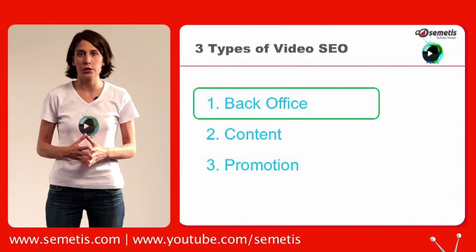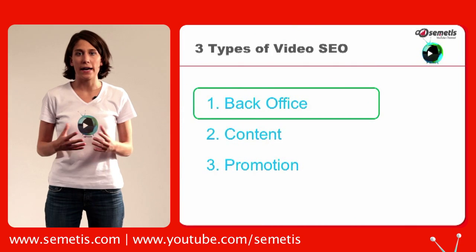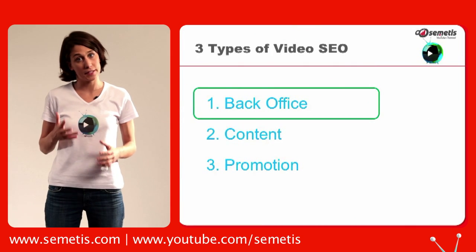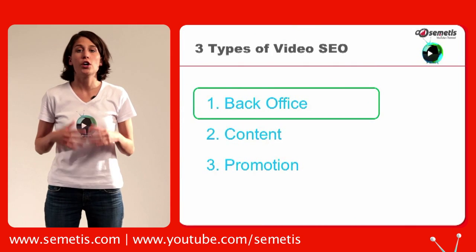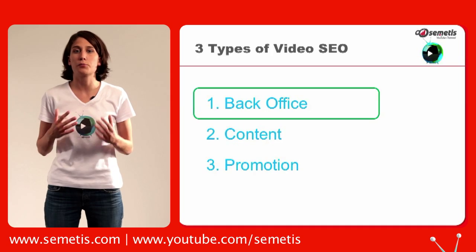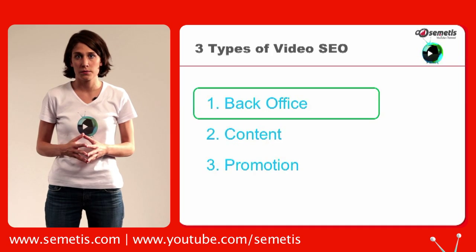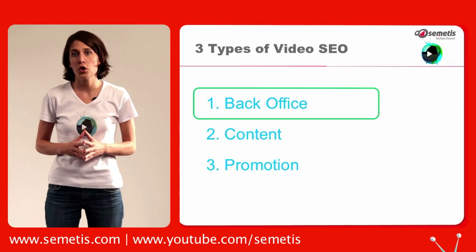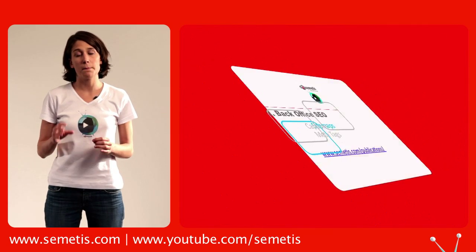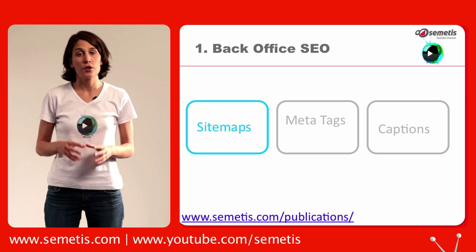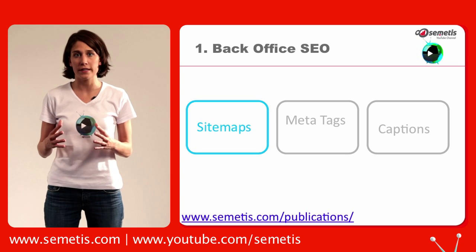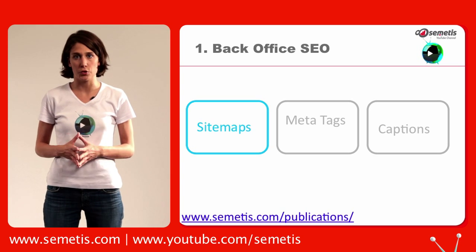There are three types of video SEO: backoffice, which is everything that is not directly visible, content, and promotions. In the first part of this video, we will go over backoffice. The second part will include content and promotion.